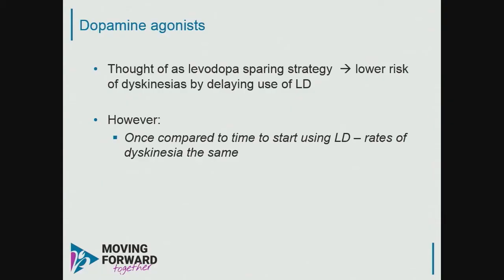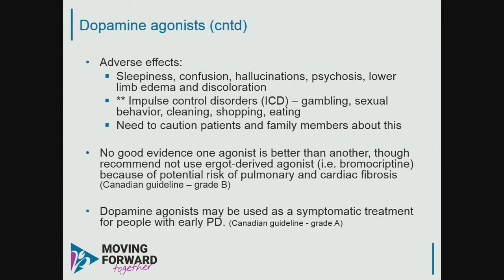Dopamine agonists — most familiar are pramipexole, ropinirole, and rotigotine, a transdermal agent — are the second most potent class of medications for Parkinson's. They work well but have a number of side effects: sleepiness, confusion, hallucinations, and impulse control disorders, which can be quite devastating and can sneak up on people — going from buying no lottery tickets to buying one a day. There's no good evidence one agonist is better than another, and they can be used for symptomatic early management. They were thought to delay dyskinesia, but the analysis shows from time of starting levodopa, dyskinesia onset is the same.